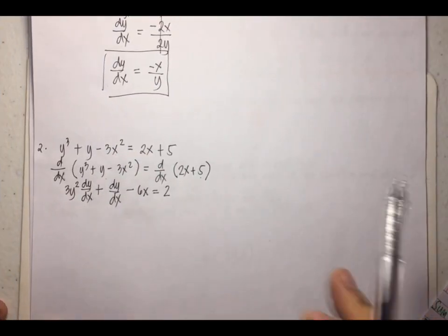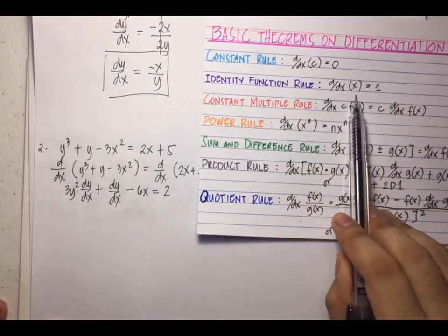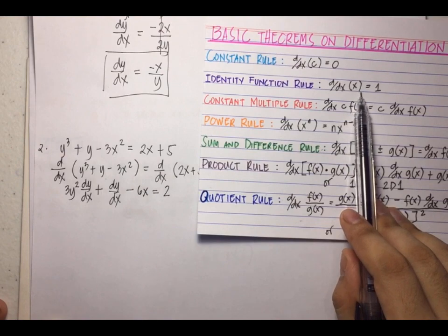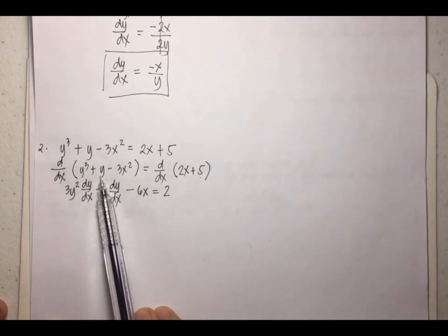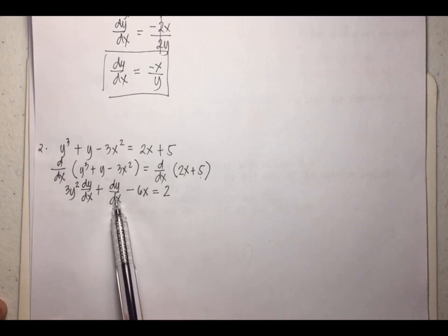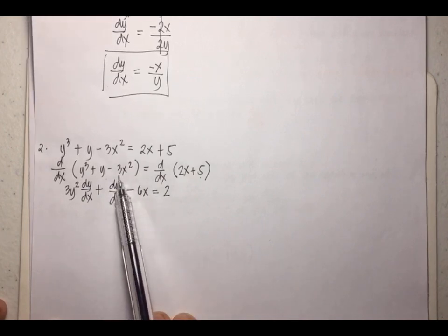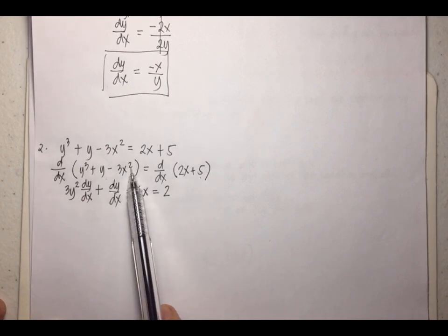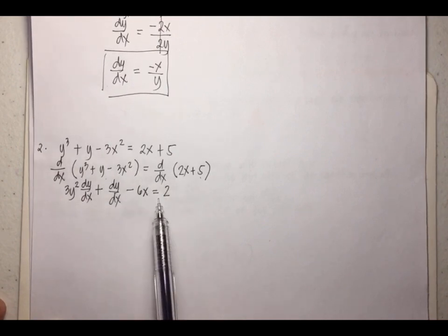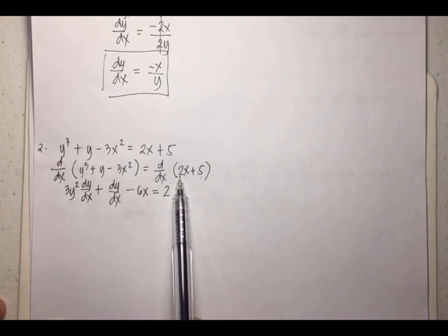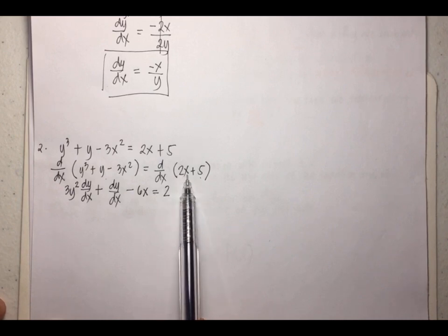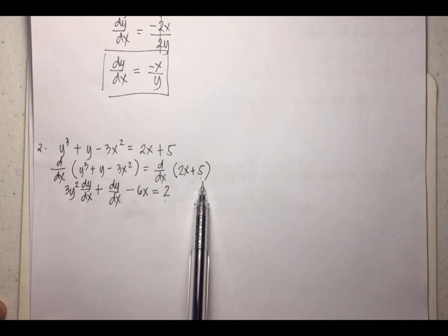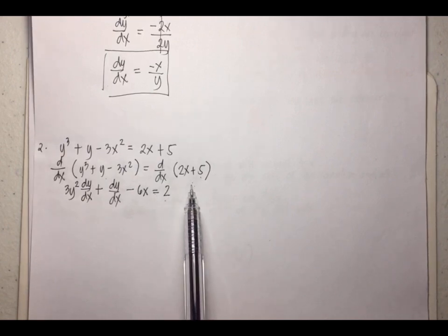Plus the derivative of y — applying the identity function rule, the derivative of x is 1, so the derivative of y is also 1. Since this is y, multiply by dy/dx, giving dy/dx. Minus the derivative of 3x²: applying the power rule gives 6x. On the right side, the derivative of 2x is 2, and the derivative of the constant 5 is 0, so the right side is simply 2.